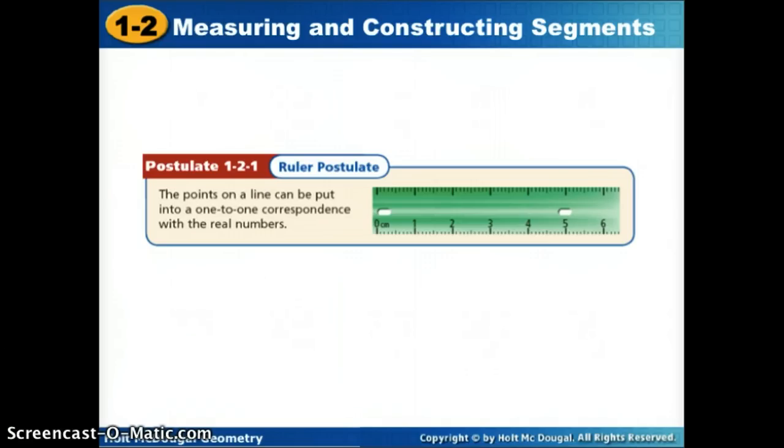The first postulate we're going to learn about—remember, a postulate is just a statement that we accept as true and can use in the future—is the ruler postulate. I only want to mention it because it might come up in the future, but it simply gives points on a line a measurement. Each point on a line corresponds with a real number. If I lined up a segment and it started here and ended here, I could say that segment was 3 centimeters long. It simply gives a distance to a segment.